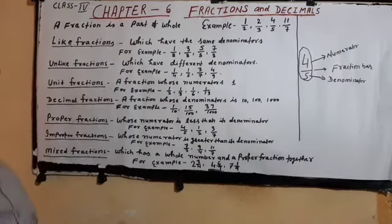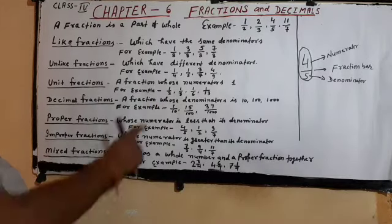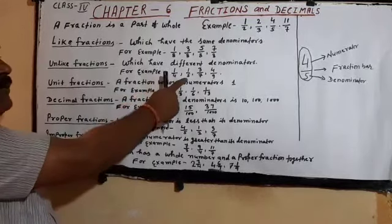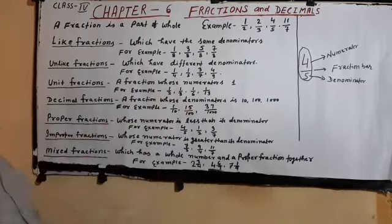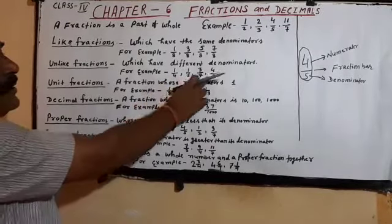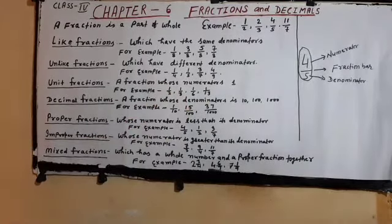Next, unlike fractions — fractions which have different denominators. For example, 1 by 4, 1 by 5, 3 by 7, and 4 by 9. You can see all denominators are different. So, this is the unlike fraction.